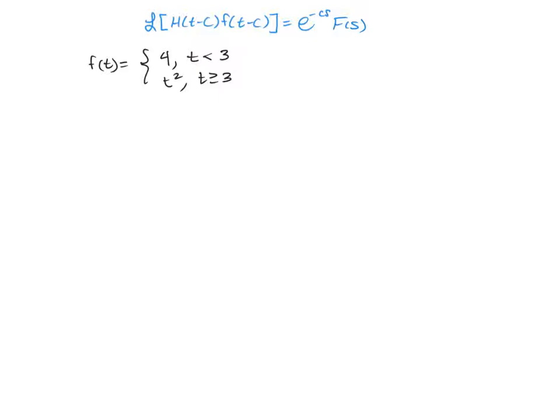So the first step is to take it from a piecewise format and rewrite it using interval functions. So that is going to be our f(t) equals 4 times the interval function from 0 to 3 of t plus t squared times the Heaviside function at 3.